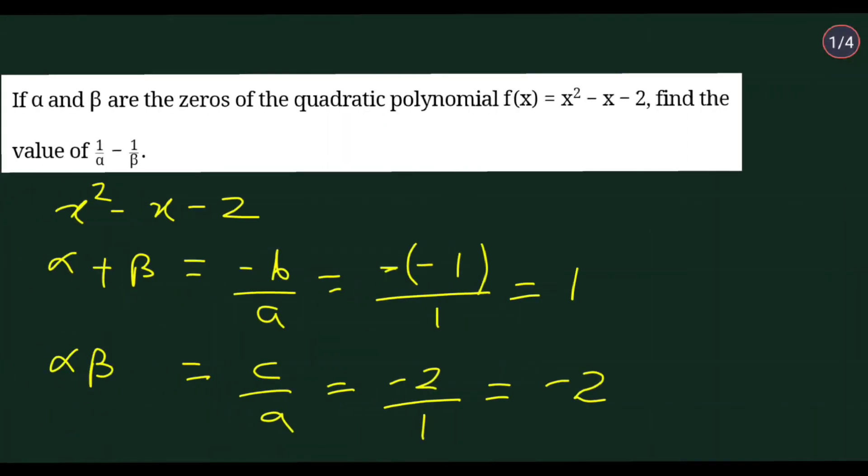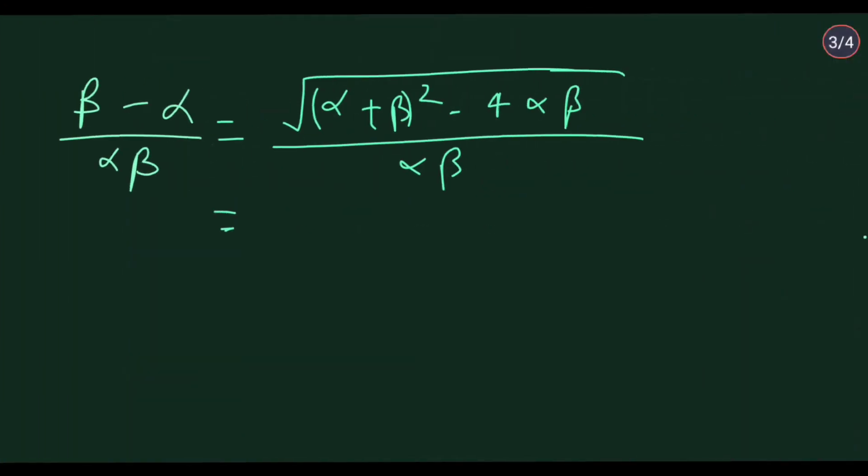Beta minus alpha upon alpha beta equals root of alpha plus beta whole square minus 4 alpha beta. And the value of alpha plus beta and alpha beta, it is 1 and minus 2. We put this here. Alpha plus beta is 1, so it is 1 square minus 4 into minus 2, and in denominator alpha beta is minus 2.